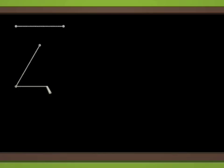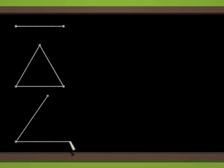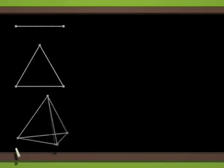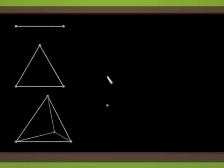As a first attempt at understanding, we shall proceed by analogy. Here is a segment and an equilateral triangle, and finally a regular tetrahedron. Our magical blackboard enables us to draw in space. How can we keep this up in four dimensions? Observe that the segment, the triangle, and the tetrahedron have two, three, and four vertices respectively. Therefore, we can try to continue with five vertices.